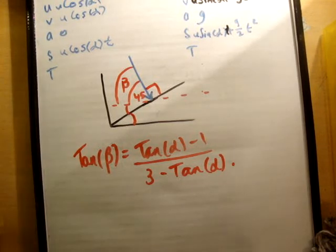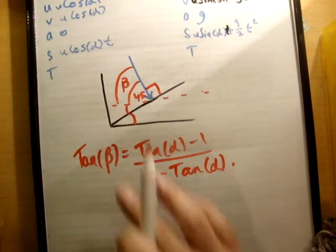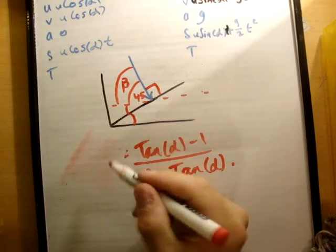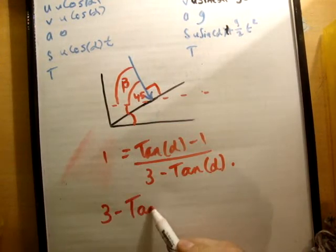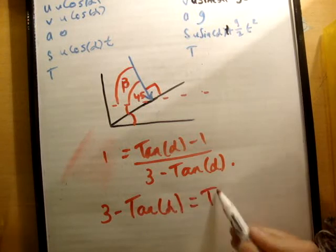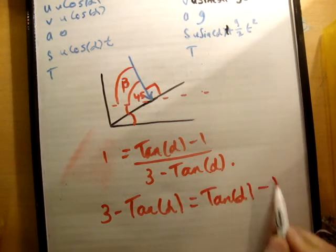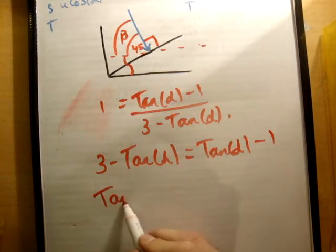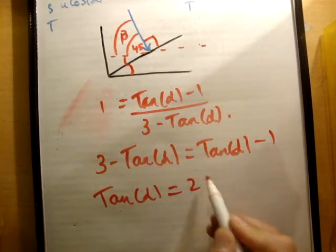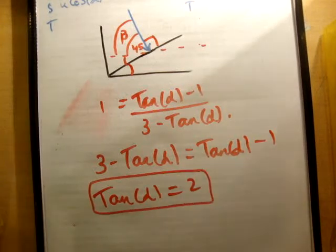Now, if that is the case, well, tan beta, if it's 45 degrees, tan beta is actually 1. That means we have 3 minus tan alpha is equal to tan alpha minus 1. And what we get again is that tan alpha is equal to 2. Now, the answer given in the book is 3.